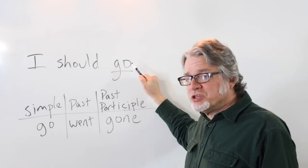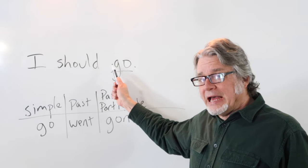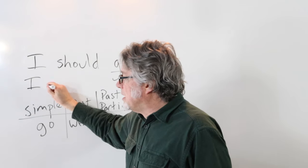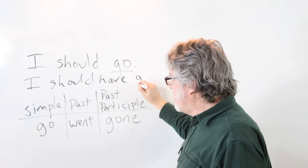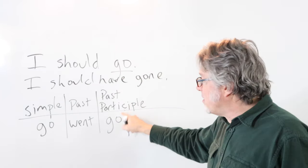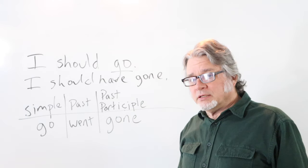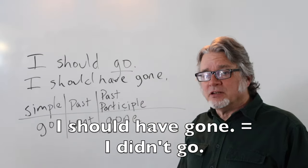I should go. This is for now. To make it past, I should have gone. Now, the main verb is in the form of a past participle. I should have gone. In this sentence, it sounds like I didn't go.